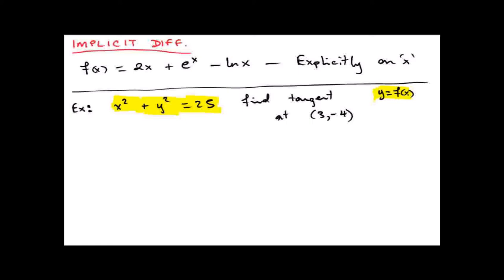This is not an explicit function — it's an implicit function. It depends on x and y, but the problem is that y is also a function of x, so you've got a function of x and then a function of that function. We're differentiating a function of y, but y is also a function of x — so what rule do you use when you have a function of a function? Chain rule.